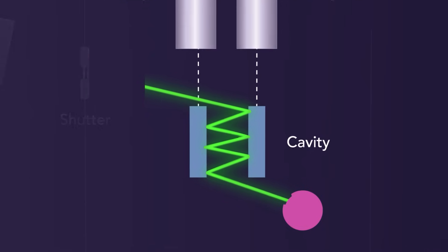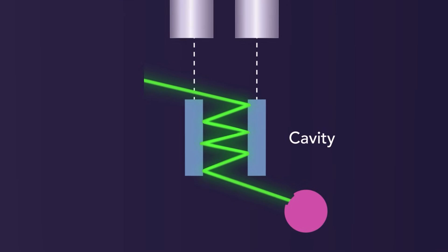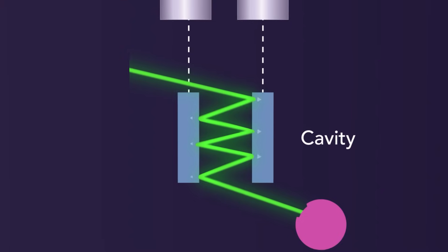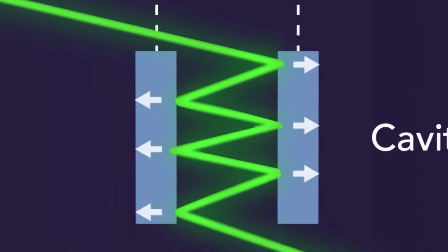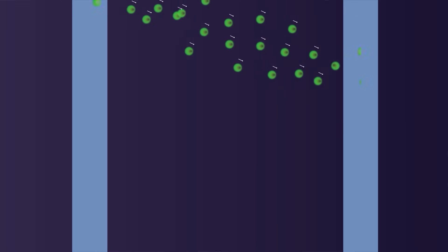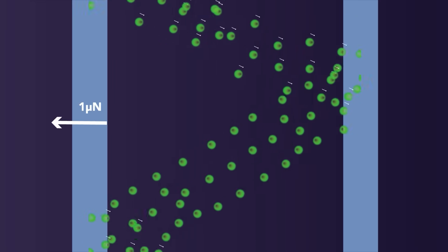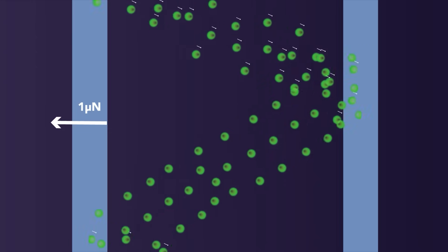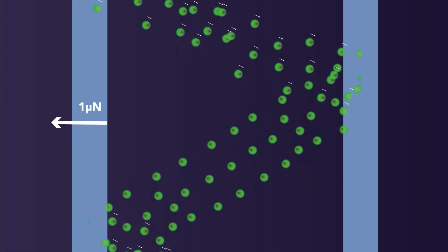To test their technique, Vasiljan and his colleagues carefully aligned the cavity's mirrors to ensure the laser beam is reflected as many times as possible before escaping. The team's system enabled them to amplify the forces imparted by photons by a factor of thousands, from hundreds of piconewtons to just under one micronewton.